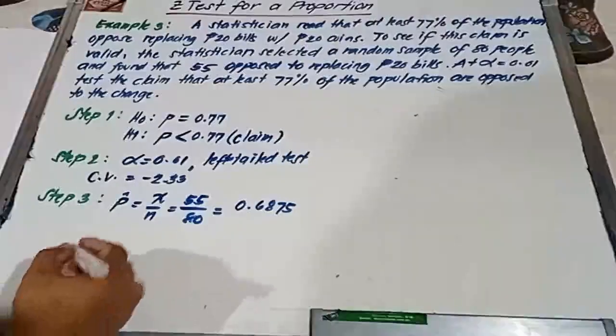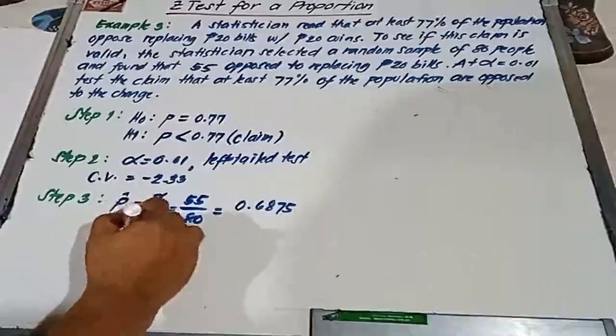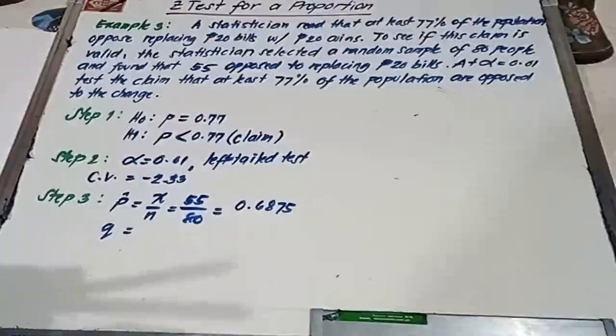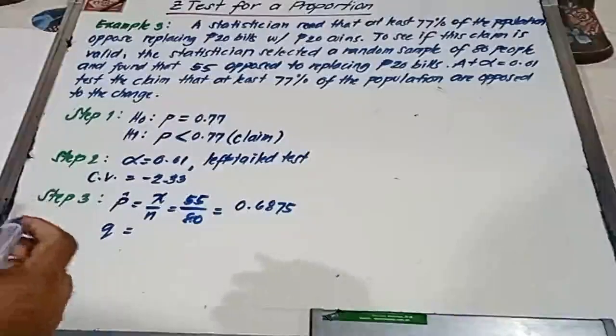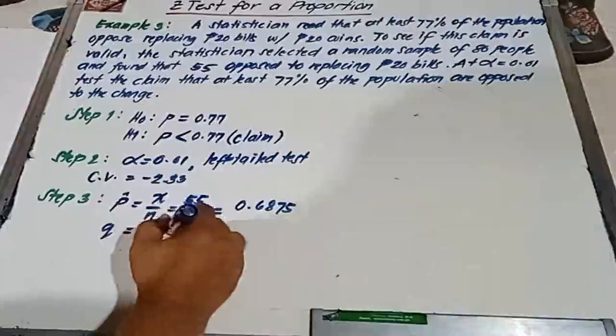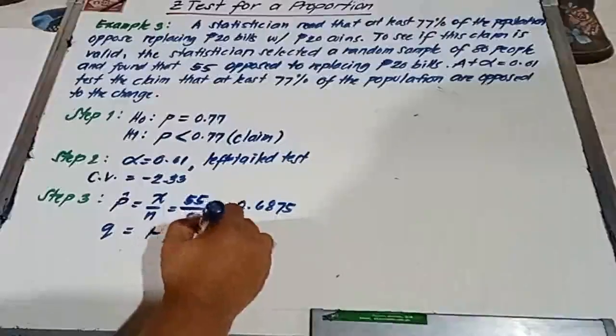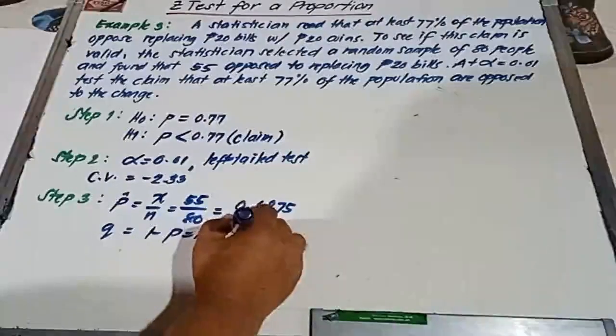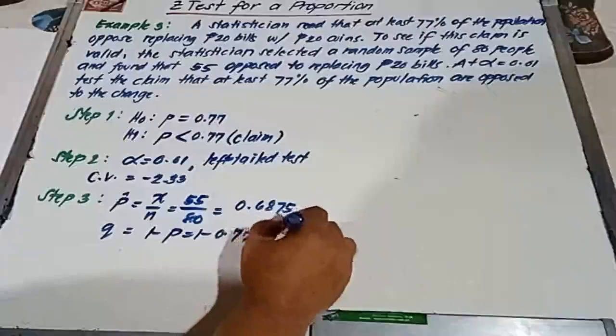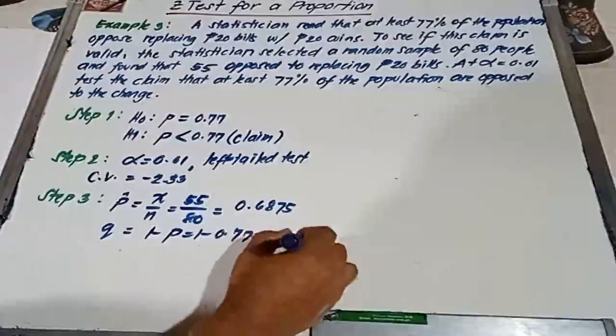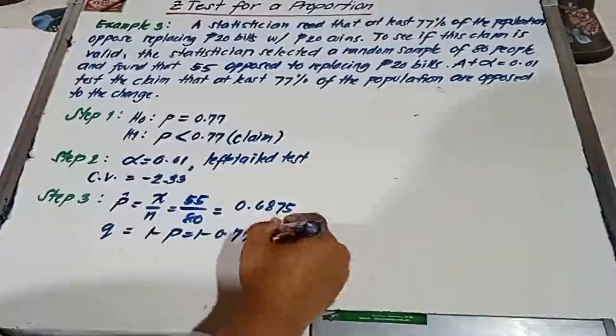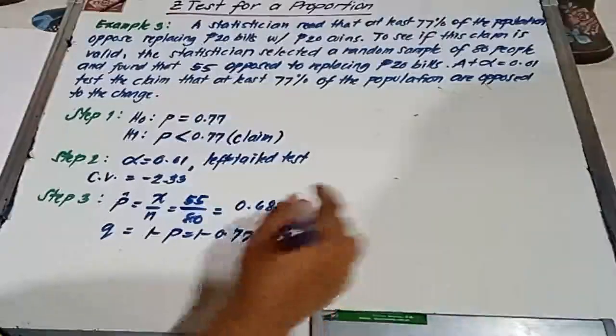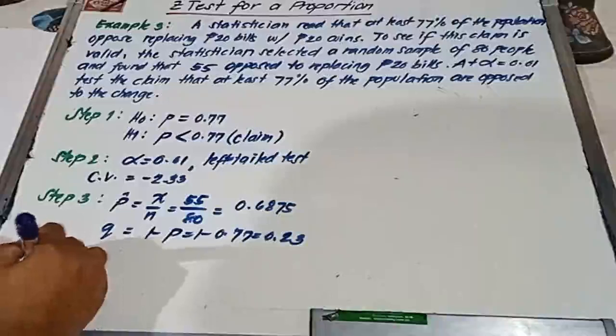Now next, we determine the value of Q. That is the percentage that did not oppose replacing the 20 peso bills. This is 1 minus P, which is 1 minus 0.77 equal to 0.23.